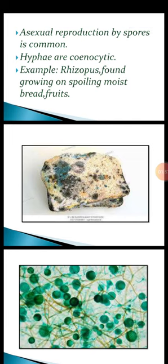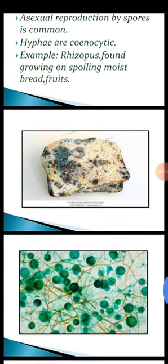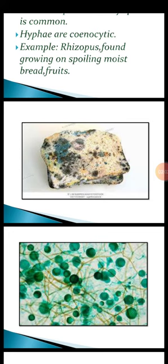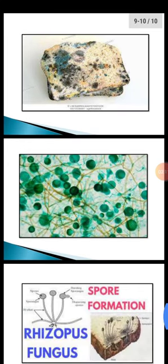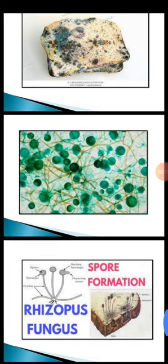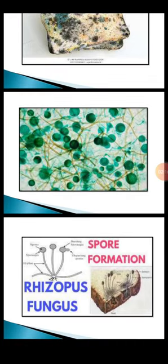If you place a piece of bread in moisture or air, after some days you can see black spores appear on it. These are called Rhizopus, or black bread mold. Some pictures of Rhizopus are shown under the microscope. Rhizopus fungus produces black colored spores on spoiled bread.